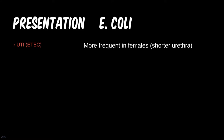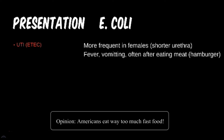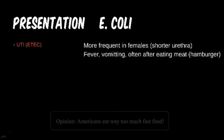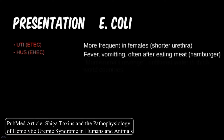A child is brought in by their parents with typical sick symptoms of fever and vomiting. They recently went to a family outing to a fast food burger joint. What is the cause of this child's vomiting, and what is the severe form of this disease? EHEC causes hemorrhagic gastritis, which can lead to kidney failure. This uremic syndrome is associated with a Shiga toxin produced by several enteric bacteria.